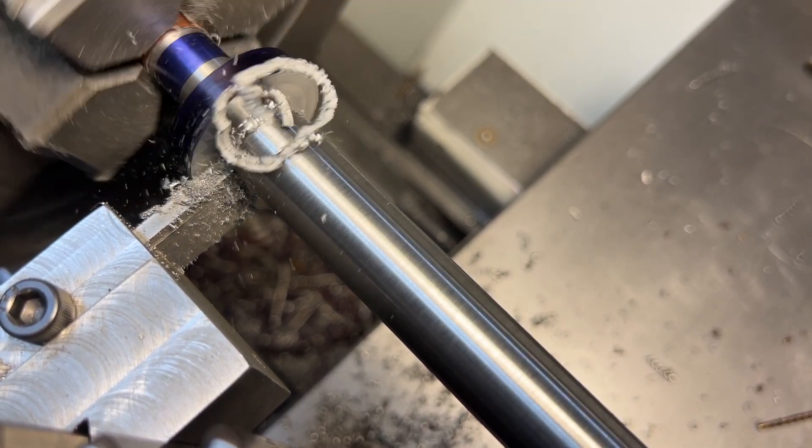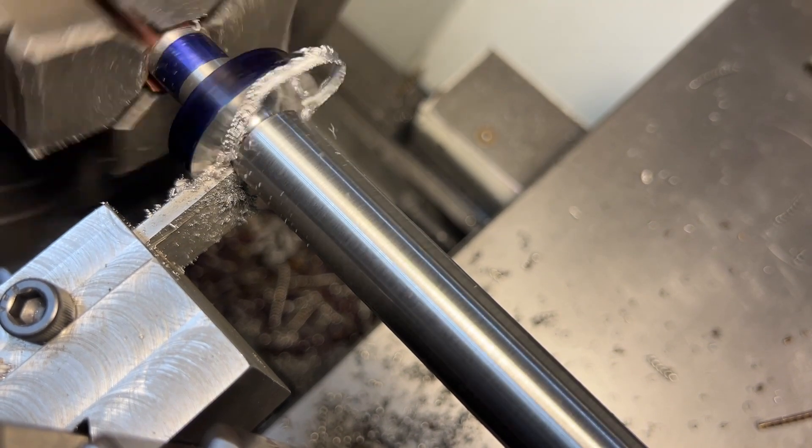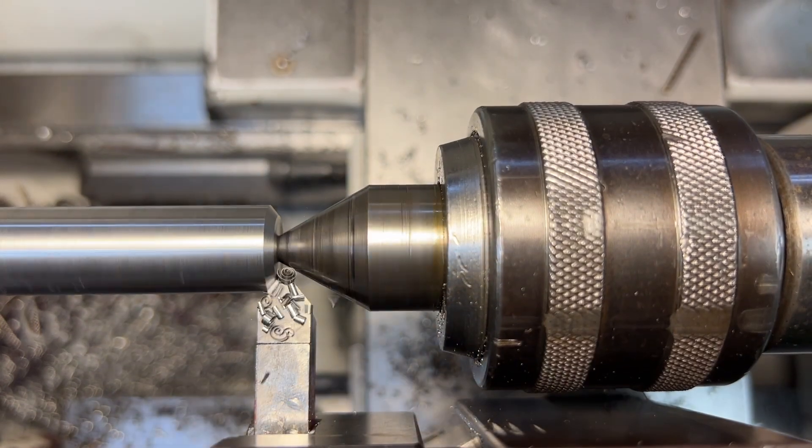We will finish up with a generous eighth inch radius in the corners of this thread relief and then on the end of the part we are going to put a wide chamfer to help get our thread started.